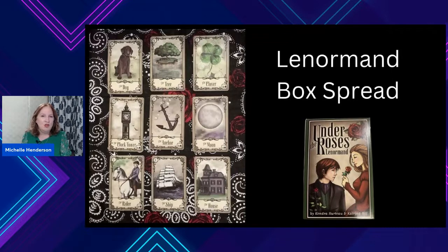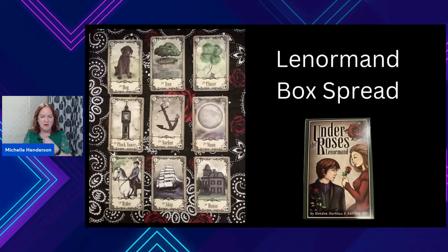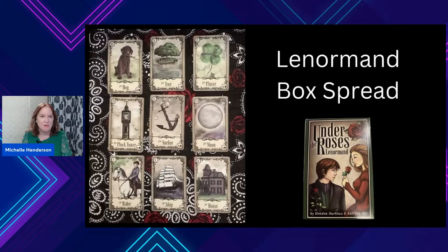I am going to show you how to do what is considered a box spread. It has nine cards and there are three cards in each row. Whenever I look at the cards, A, B, and C will be the card spread. A is the dog — that's where we start. B is the tree. C is the clover. We go in that direction so that you know what cards I am talking about. Let's go ahead and start getting this information.